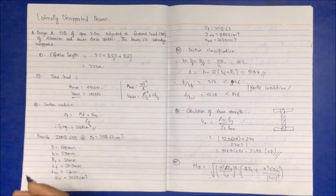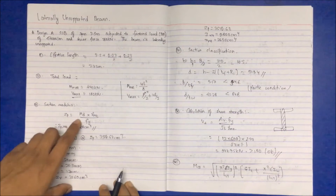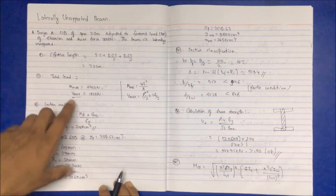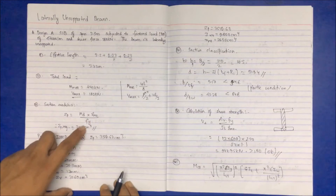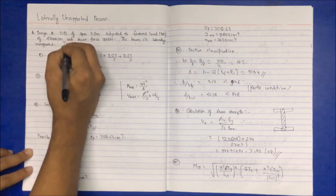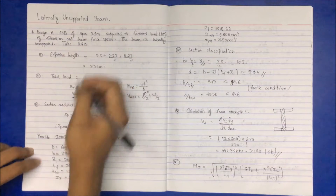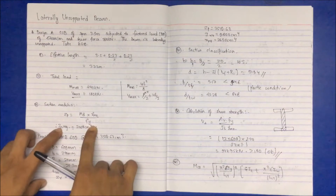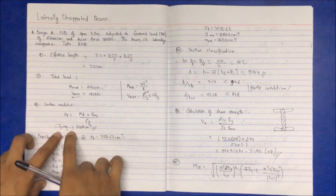The third step is to determine the section modulus. The plastic section modulus ZP required is calculated by the formula: ZP = M_d × γ_M0 / F_Y, where M_d is the maximum bending moment, γ_M0 is the partial factor of safety, and F_Y is the yield stress. For Fe 410 steel, F_Y is 250 MPa, giving us the required ZP value.